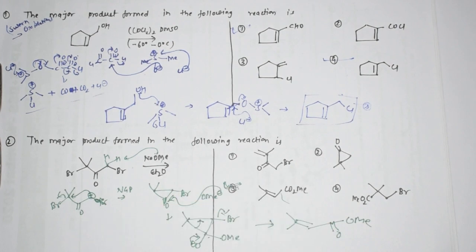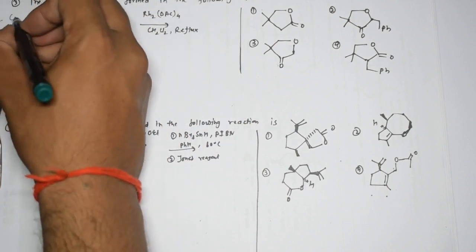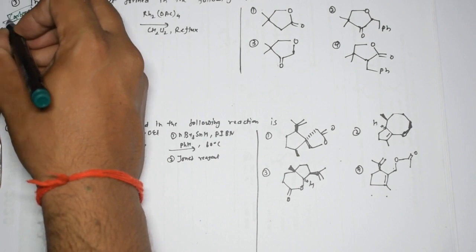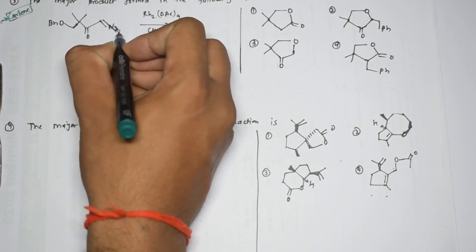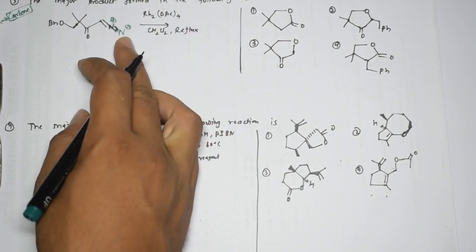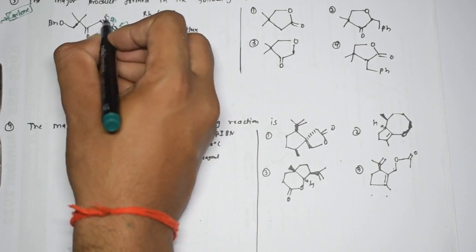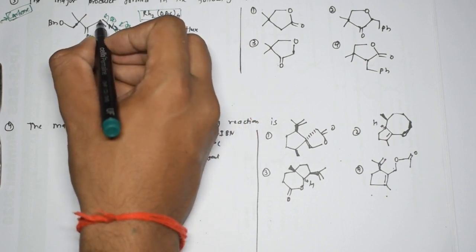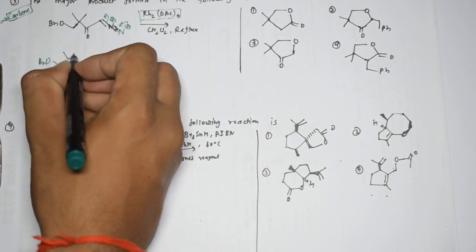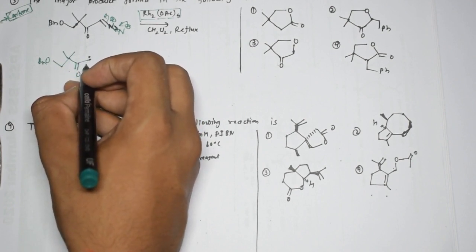The next question asks for the major product of the following reaction. This has already been covered in the reactive intermediates (carbene) lectures. If you haven't watched those, go review them. Here we have N₂ - specifically N double bond N with positive charge and negative charge. After the negative charge shifts and a catalyst is used, carbenoid formation takes place, producing a carbene at this position with OBn and the two groups connected.